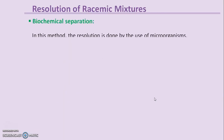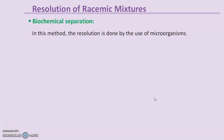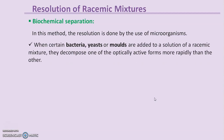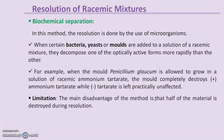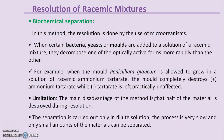Moving to the biochemical separation method. In this method, resolution is done by the use of microorganisms. When certain bacteria, yeast, or molds are added to a solution of a racemic mixture, they decompose one of the optically active forms more rapidly than the other. For example, when the mold Penicillium glaucum is allowed to grow in a solution of racemic ammonium tartarate, it completely destroys dextroammonium tartarate while levotartarate is left practically unaffected. The main disadvantage is that half of the material is destroyed during resolution, the separation is carried out only in dilute solution, and the process is very slow with only small amounts separable.